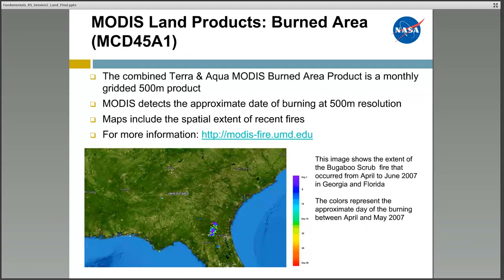This MODIS product detects the approximate date of burning and maps the spatial extent of recent fires by analyzing daily surface reflectance and using a model-based change detection algorithm to locate rapid changes on the Earth's surface. This is a monthly gridded 500-meter product. The image shows the extent of a fire that occurred in 2007 in Georgia and Florida, with colors representing the different dates of burning between April and May 2007.